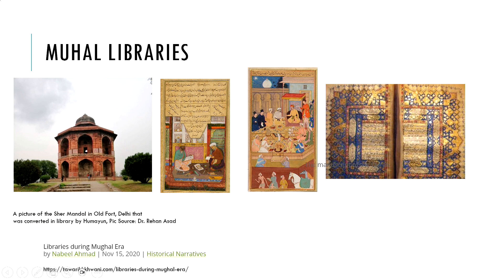From the Mughal era, we start getting more well-preserved materials. Mughals used to venerate scholarship, and there were a lot of libraries. This one was built by Humayun — a pleasure house later converted into a library in Delhi. Even Akbar, who was semi-literate, also built libraries. But because these were imperial palaces, access was still restricted.